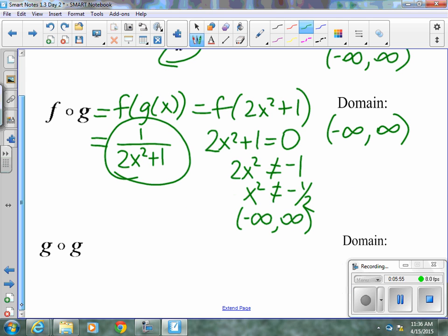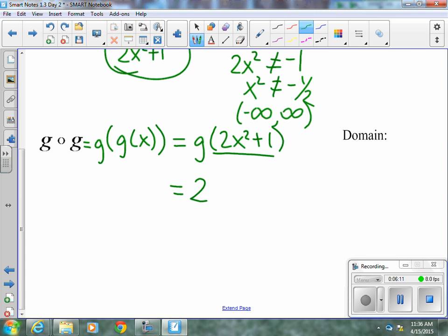g of g of g, similar situation. We need g of g of x, which is g of 2x squared plus 1. We plug 2x squared plus 1 into g. We're going to get 2 times 2x squared plus 1 squared plus 1. g has been plugged into itself.